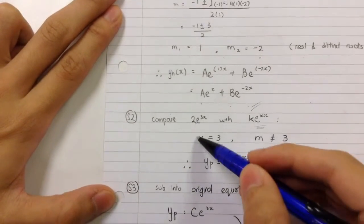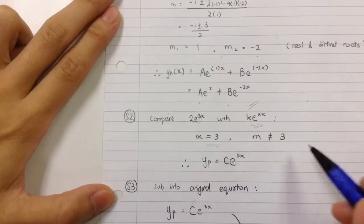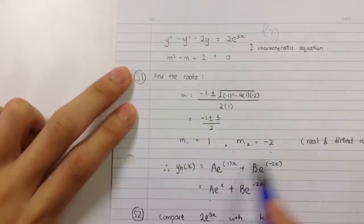I find that alpha is three here. The alpha is not equal to both of the roots.